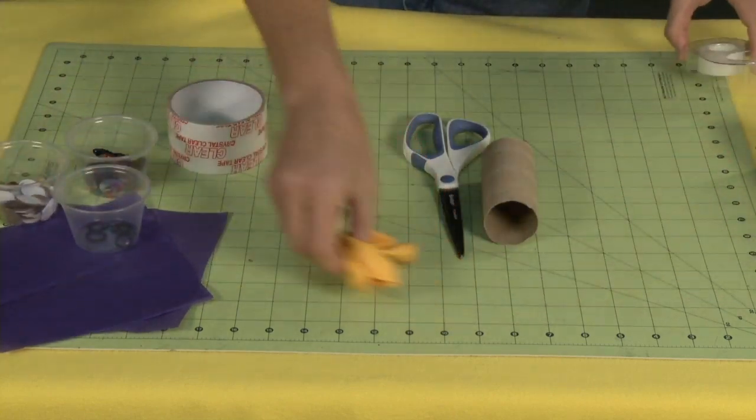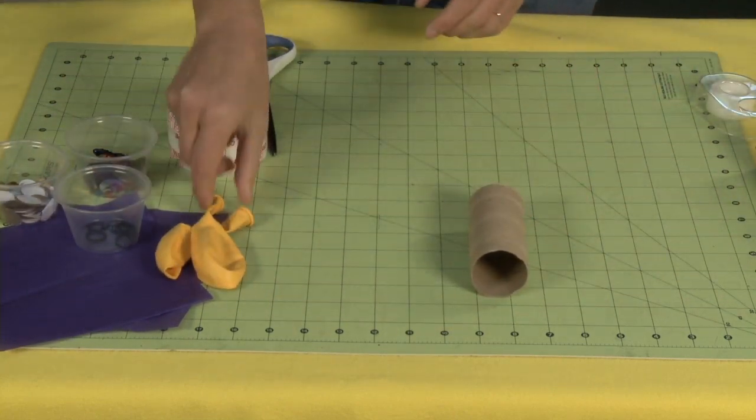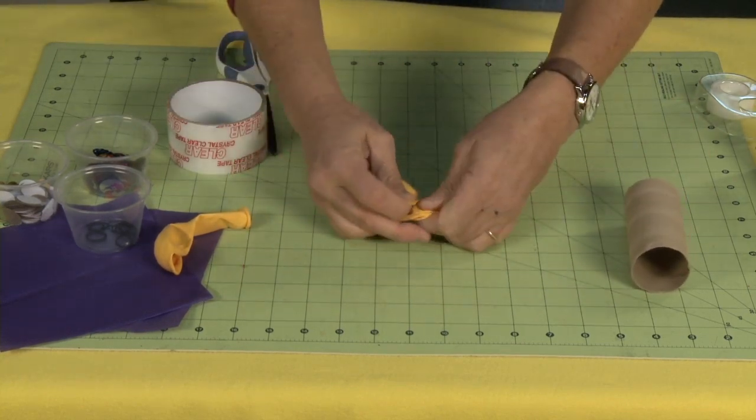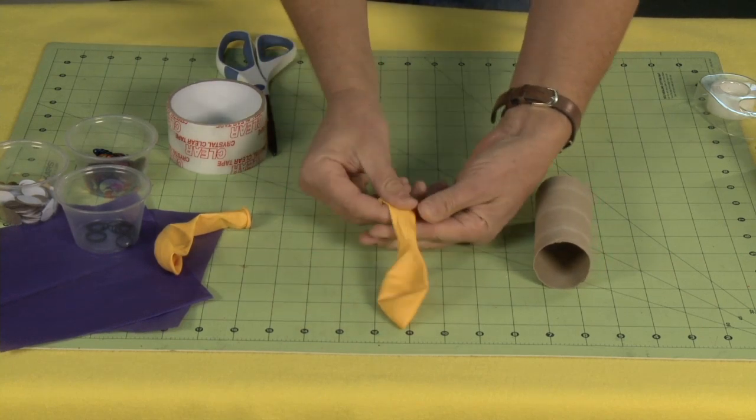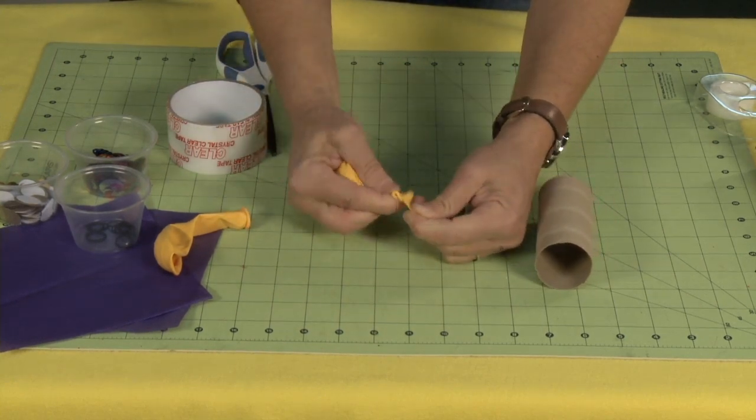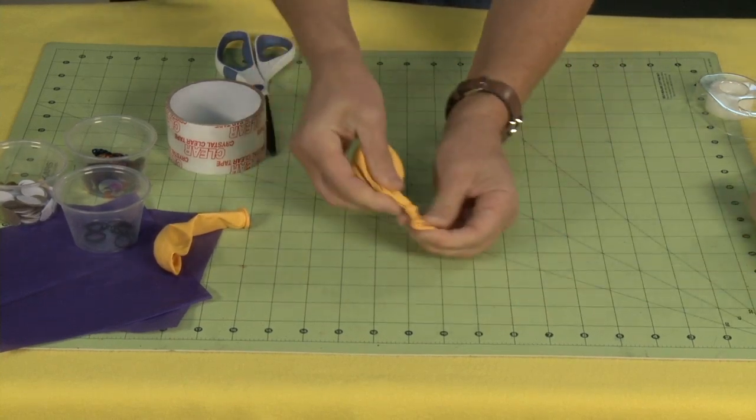First thing I'm going to do is I'm going to take my balloon and I'm going to tie it off right here at the end, just like if I was to blow it up and then tie it off. But what I'm going to do is I'm going to tie it off without blowing it up, and I want to tie it up so that it's nice and tight.